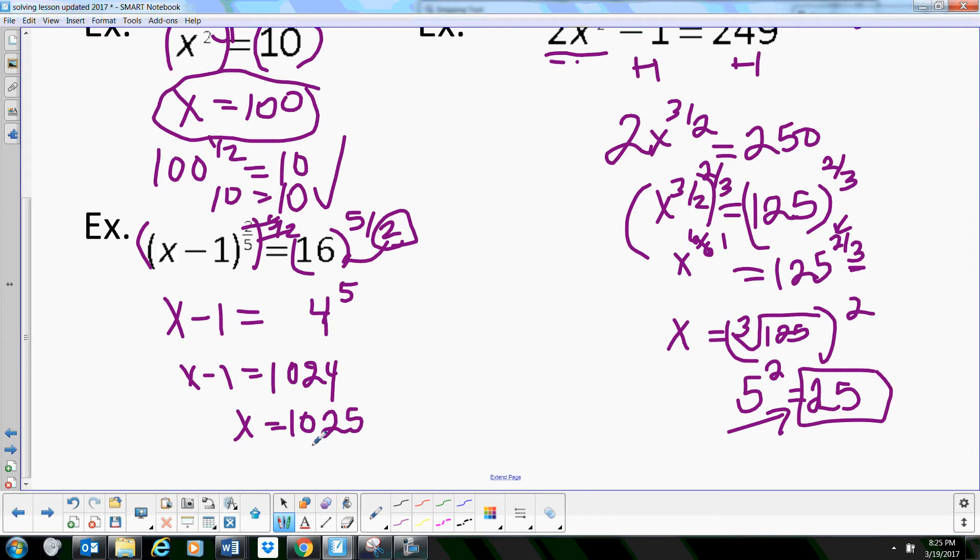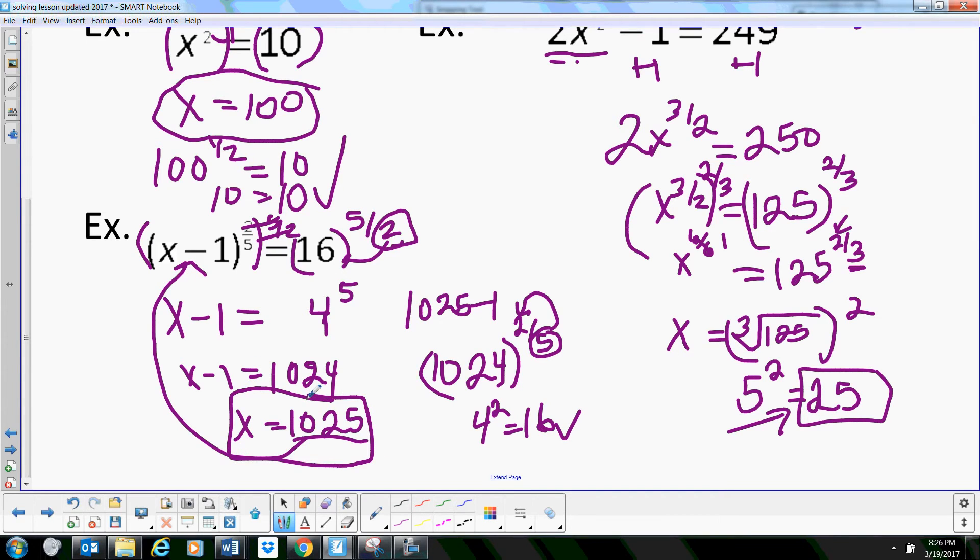Then we're going to add 1 to solve for x, and x is 1025. And again, you can take that answer, plug it back in, take 1025 minus 1. That's 1024. You're going to take 1024 and raise it this time to the two-fifths power. That means I'm taking the fifth root of that, and then I'm squaring it. Well, we know the fifth root is 4, and 4 squared is 16. So that ends up checking out. So x is equal to 1025.